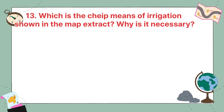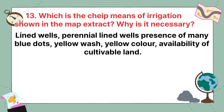Which is the cheap means of irrigation shown in the map extract and why is it necessary? Lined wells — evidenced by the presence of many blue dots and yellow coloring indicating availability of cultivable land. The main cheap means of irrigation is lined wells.